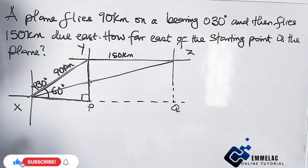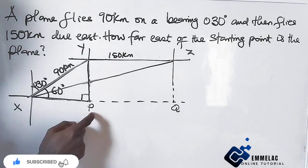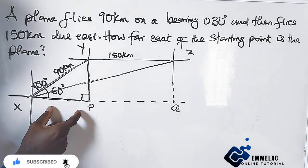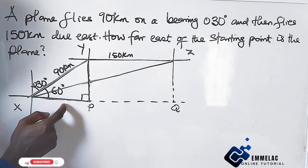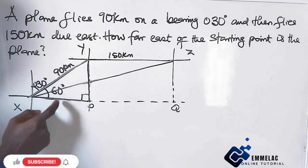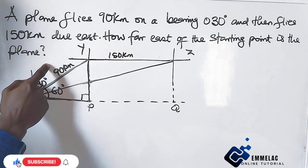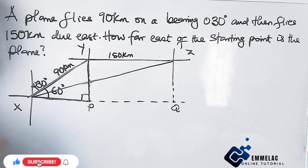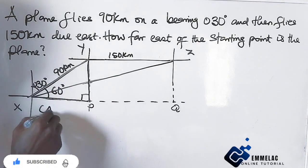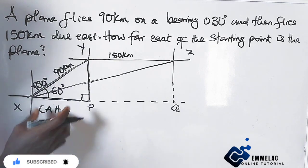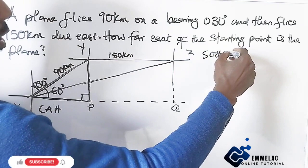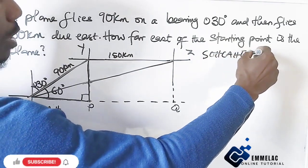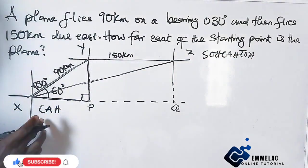We are actually looking for this part, which is XP. Now if we want to relate this part and this part, you can see this is adjacent and this is the hypotenuse. So here we have cosine from SOHCAHTOA.